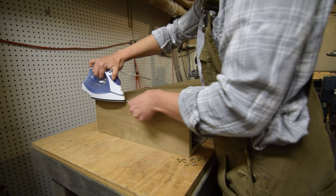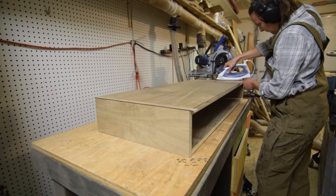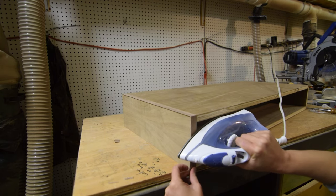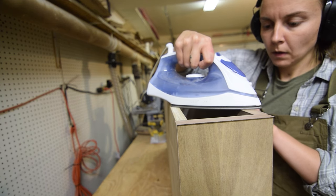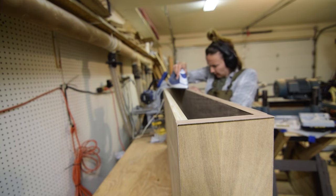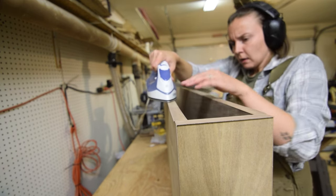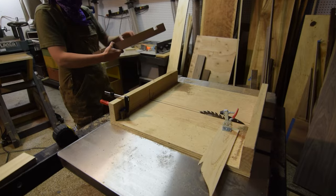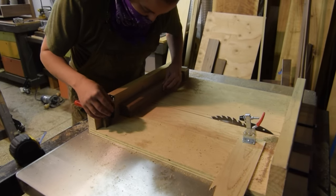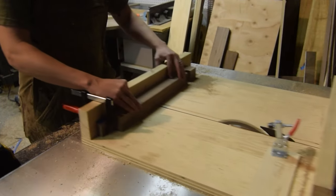After that, I ironed on the banding to tidy up the drawer box edges, then trimmed the overhang. After that, I took the legs back to the table saw to cut a recess large enough for the drawer box to sit in.